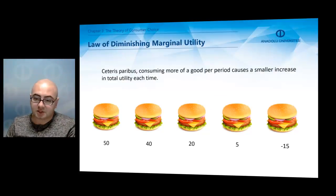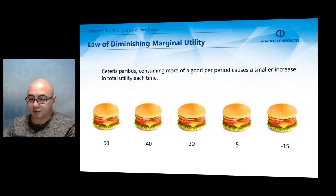Marginal utility has a tendency to diminish. This means a smaller increase in total utility every time we consume a new unit. Let's say we are having hamburgers. The first one increases the total utility by 50 points. The second one increases by 40, third one increases by 20, and fourth one increases by 5 points.